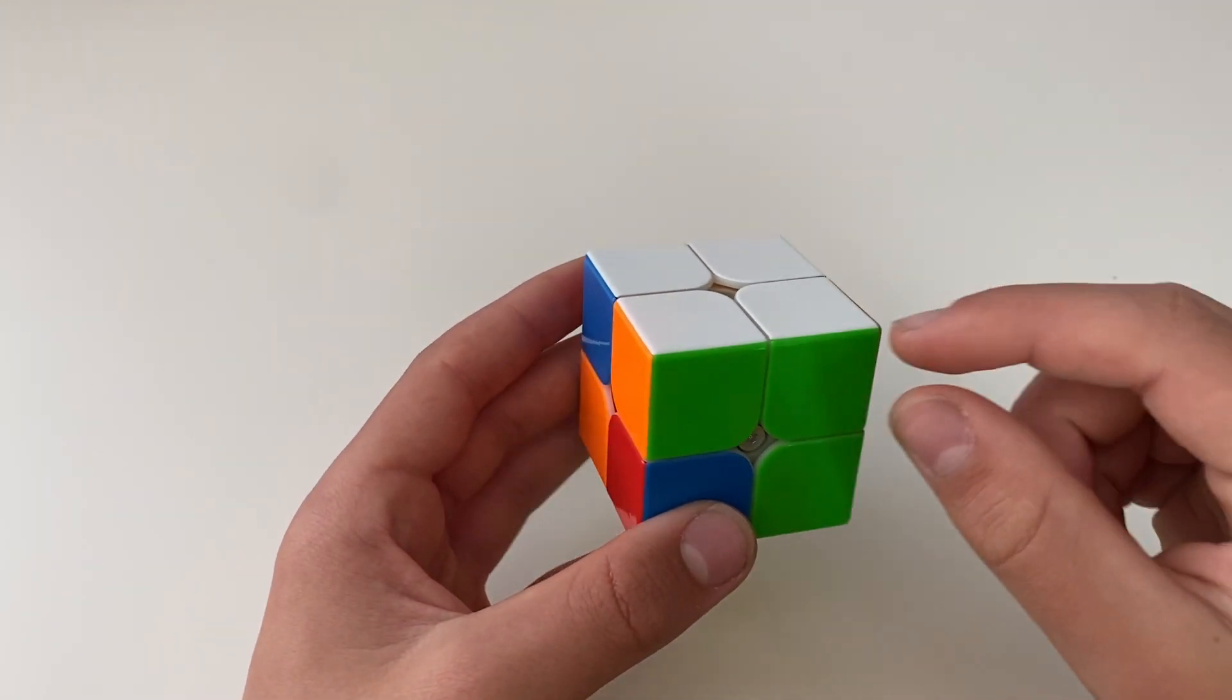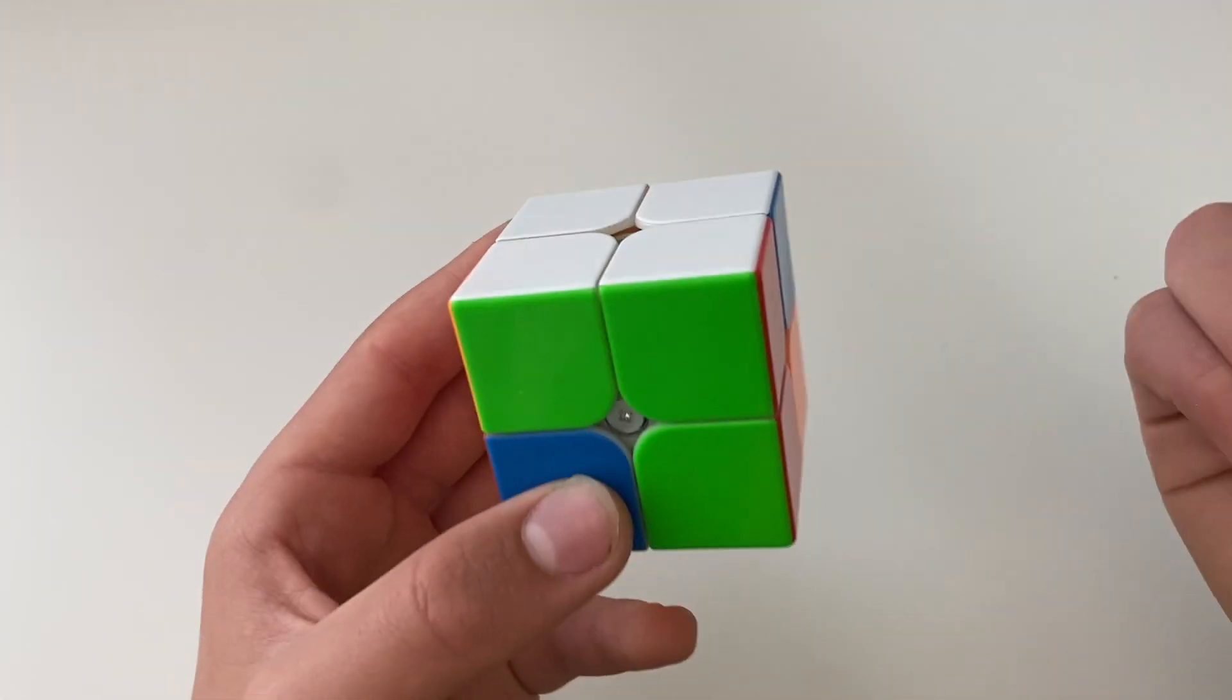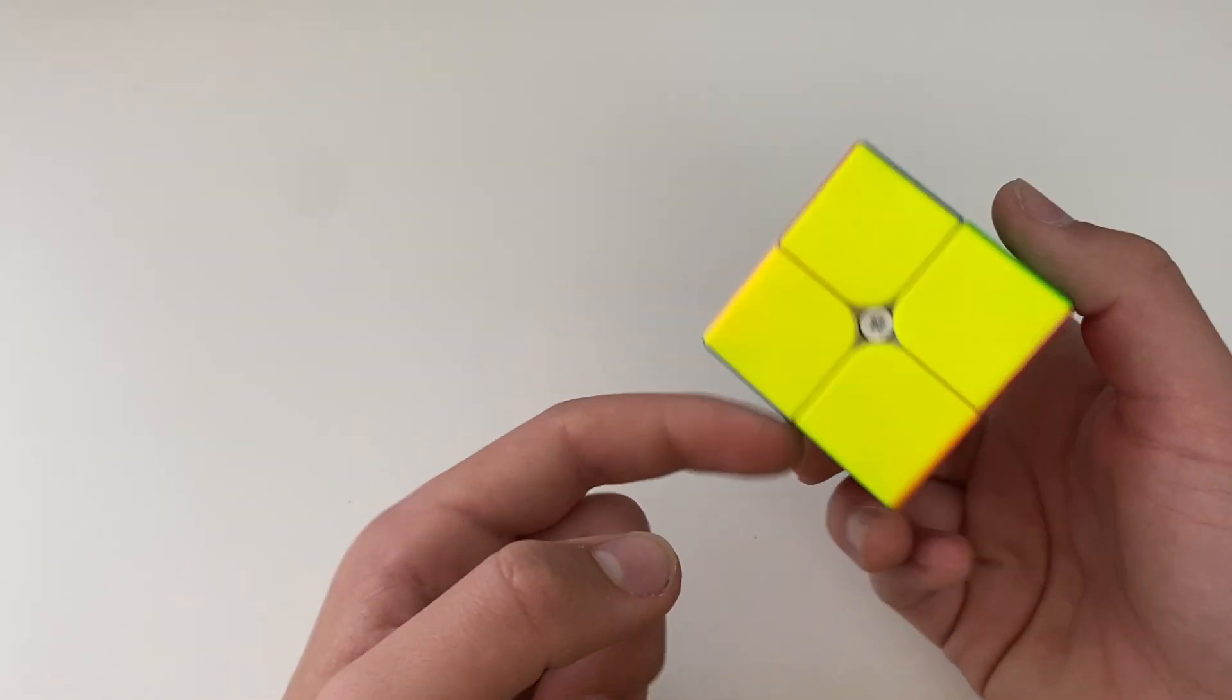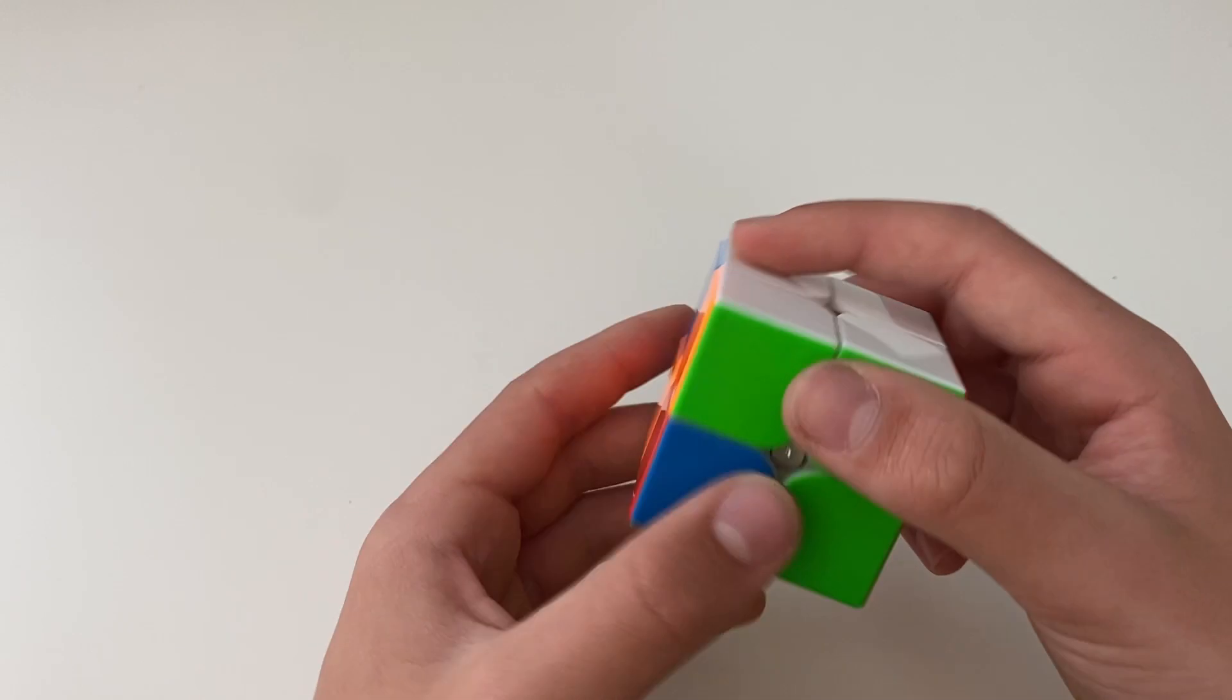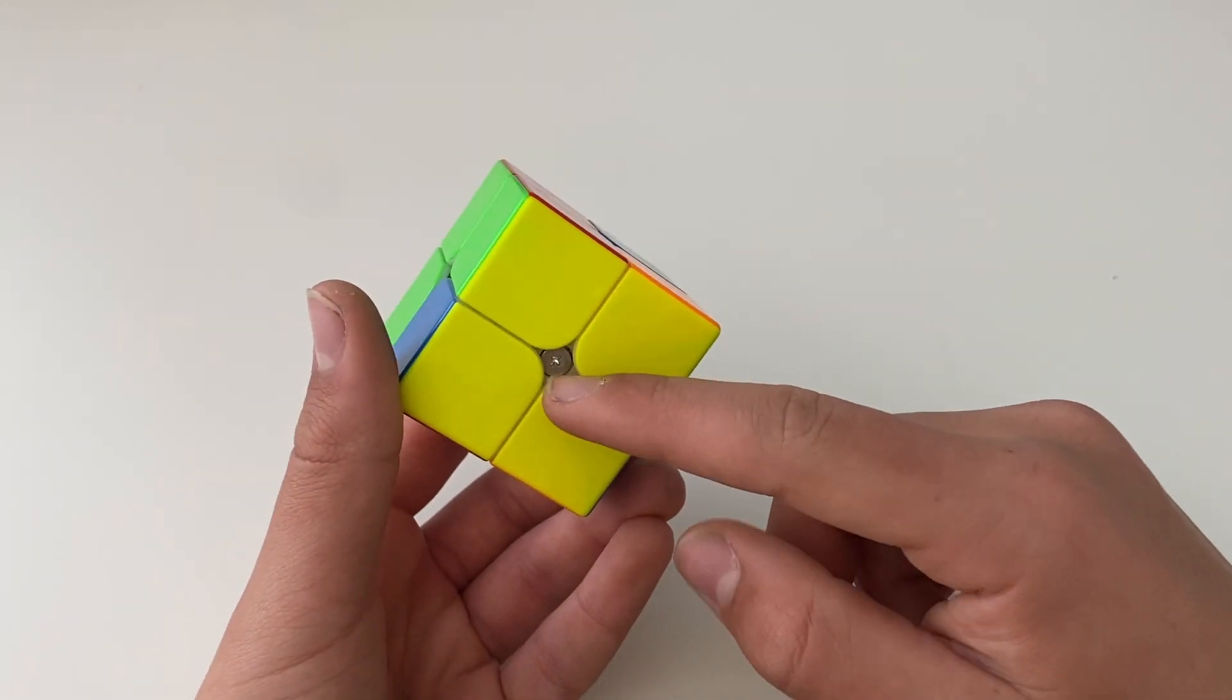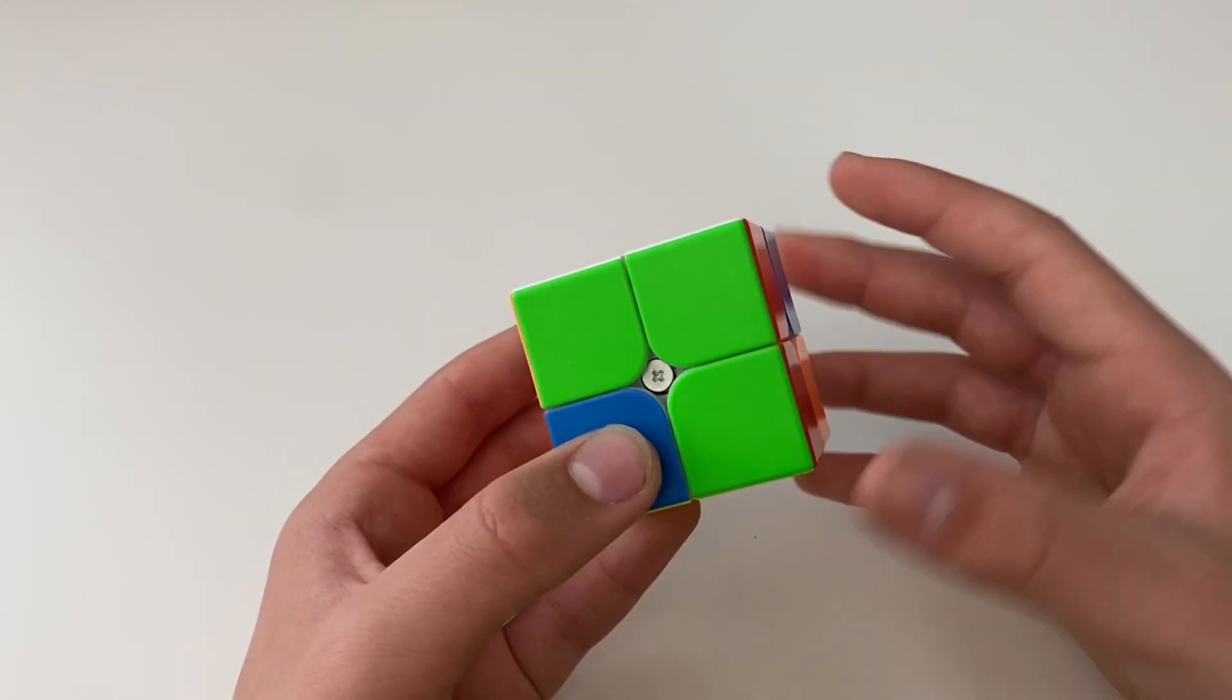The next case is when you have one bar and you want to have it on top. So you have one bar and then on the bottom you don't have any bars, so there's just diagonal. So this algorithm for when there's one bar on top and diagonal corners on the bottom is going to be this.